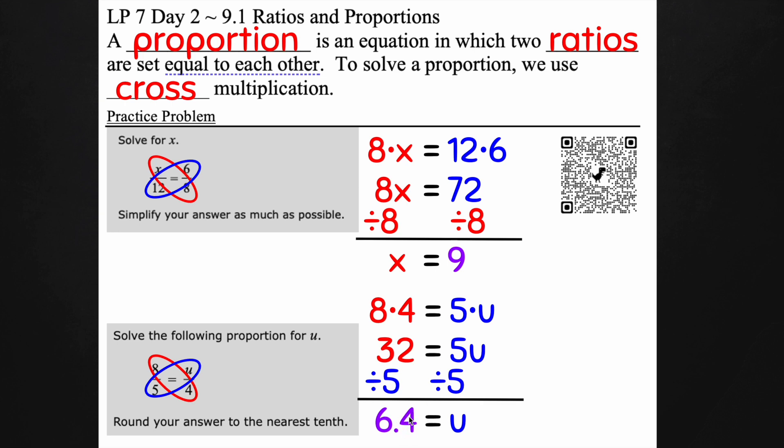If it's four or smaller you keep it the same. So u has to be 6.4. That is solving proportions using cross multiplication. I hope that helped and I'll see you in the next video.